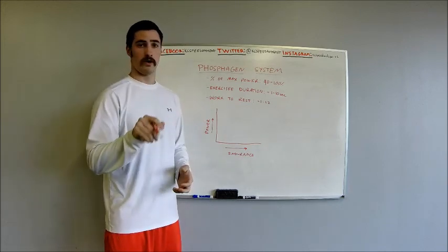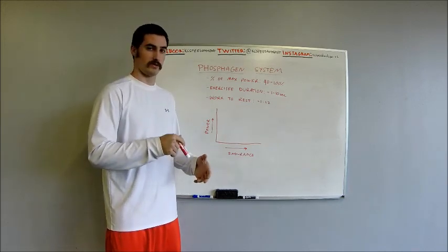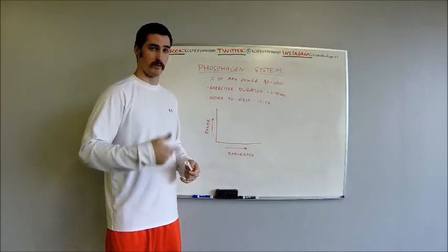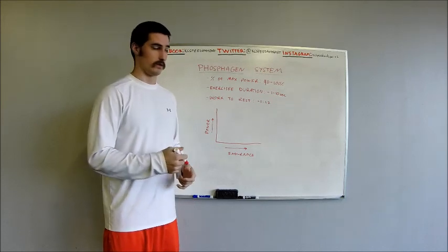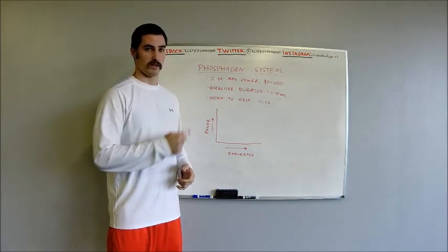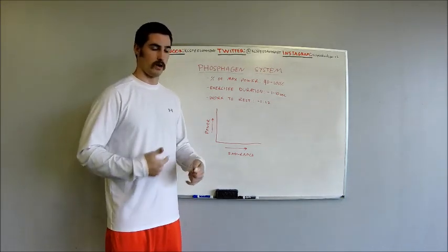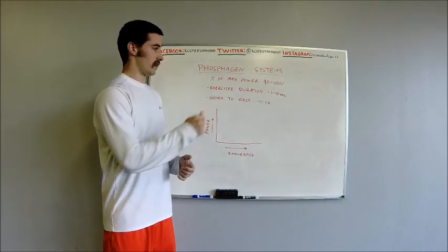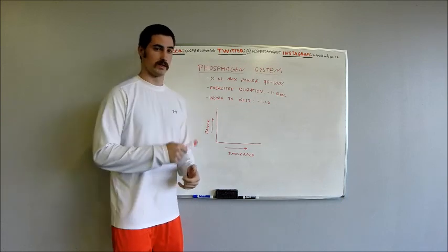First of all, all three energy systems, the point of the three energy systems is to replenish ATP, in other words, to reproduce energy in our body. At any point in time we're using these systems because we're always expelling energy. We always need to reproduce energy in our body. So the phosphagen system, when do we use this system?